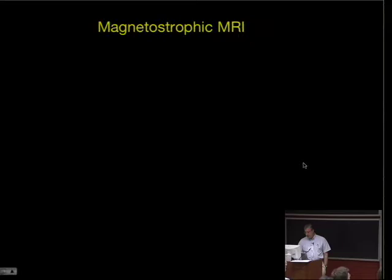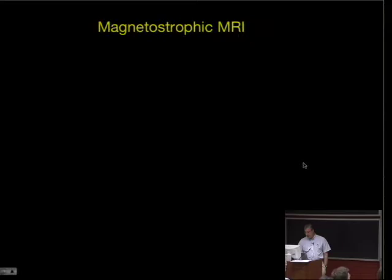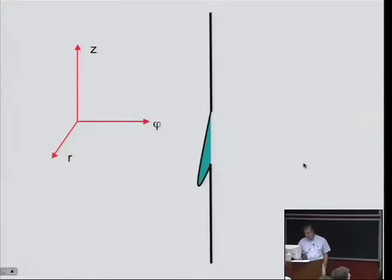In this case, because the growth rates are relatively long compared to the rotation periods, in fact, the governing equations in their entirety for the perturbations are a balance between Coriolis forces and magnetic tension forces. Little v and little b are perturbations here. And the only place where we have a time dependence in this problem is in the induction equation itself. So, I'm running out of time. Let me at least give you a picture of what this looks like. This is a version of the MRI. I have my standard z, phi and r coordinates.